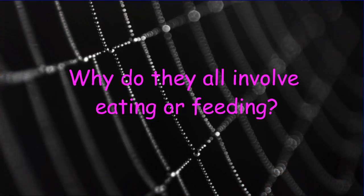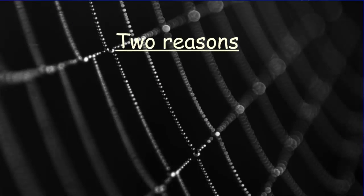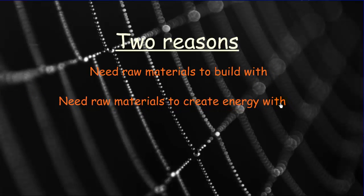All of the interactions we've discussed involve eating or feeding — either off a host or another organism. Why do they all involve eating? There are two main reasons we eat: we need raw materials to build ourselves, and we need raw materials to create energy. That energy is needed for everything, including building. This brings us to the central idea of energy flow, which we'll explore next.